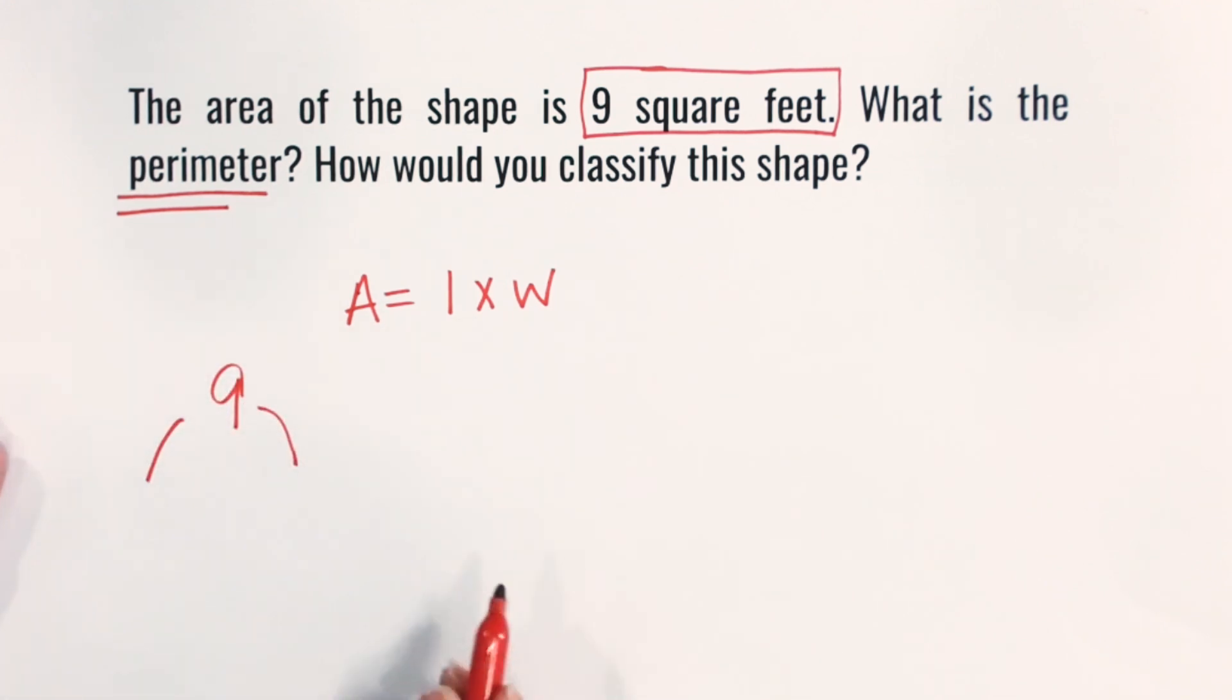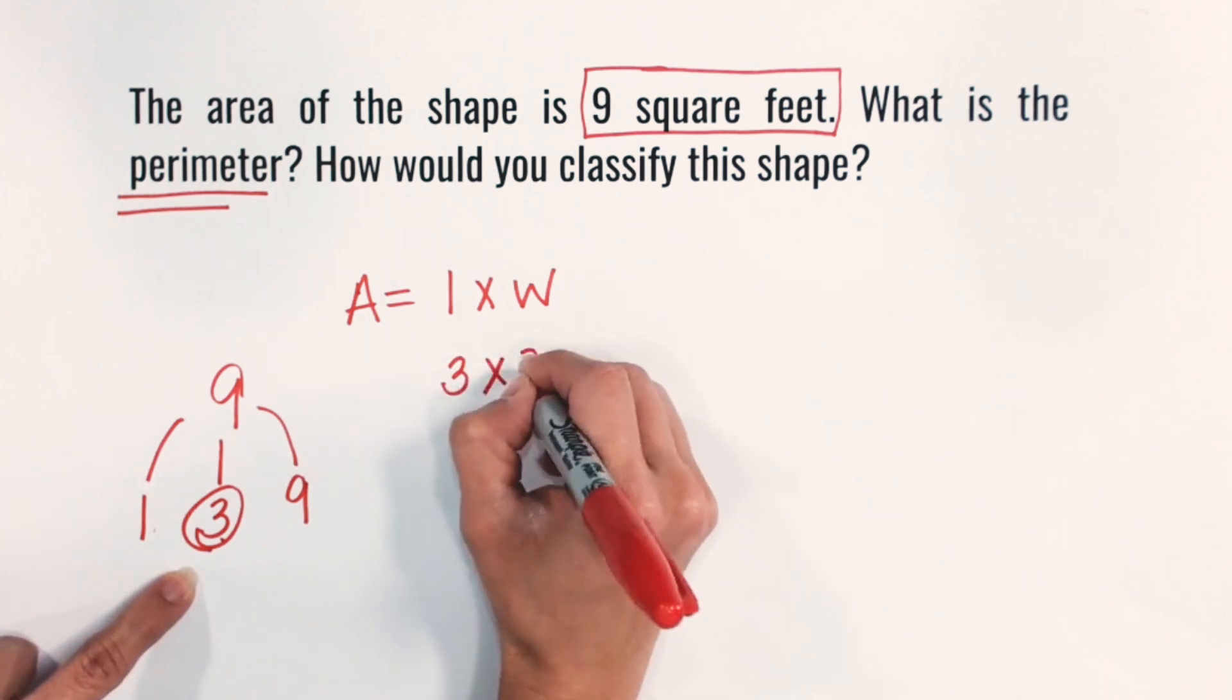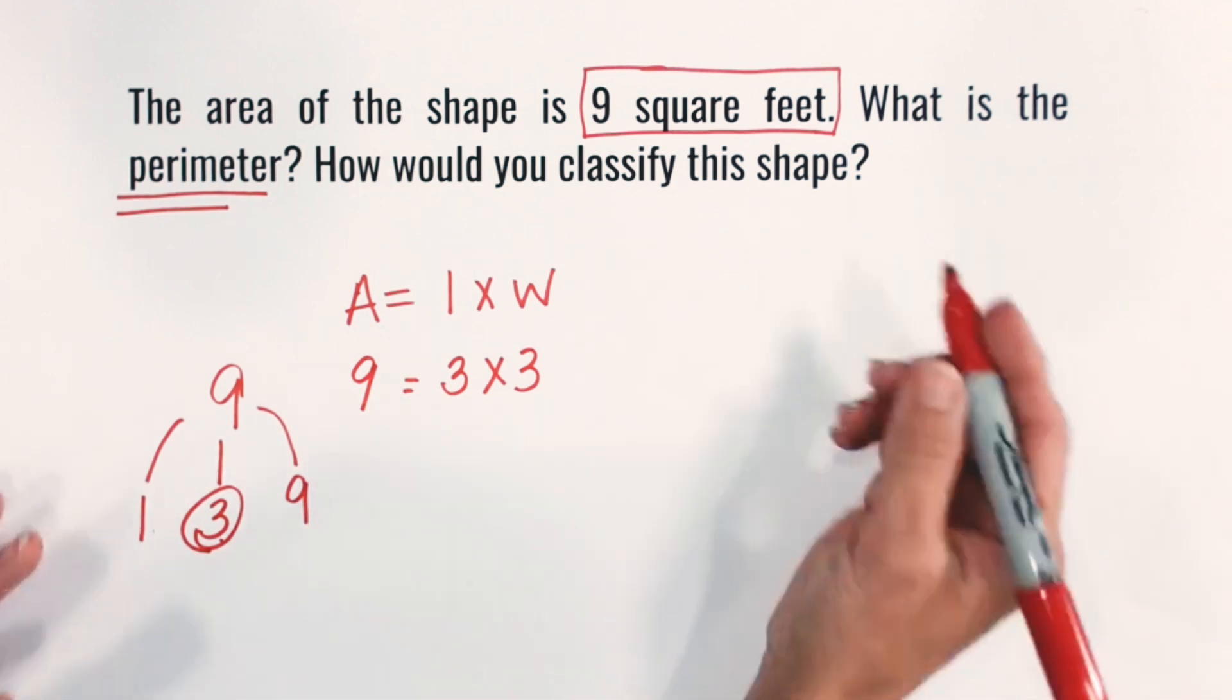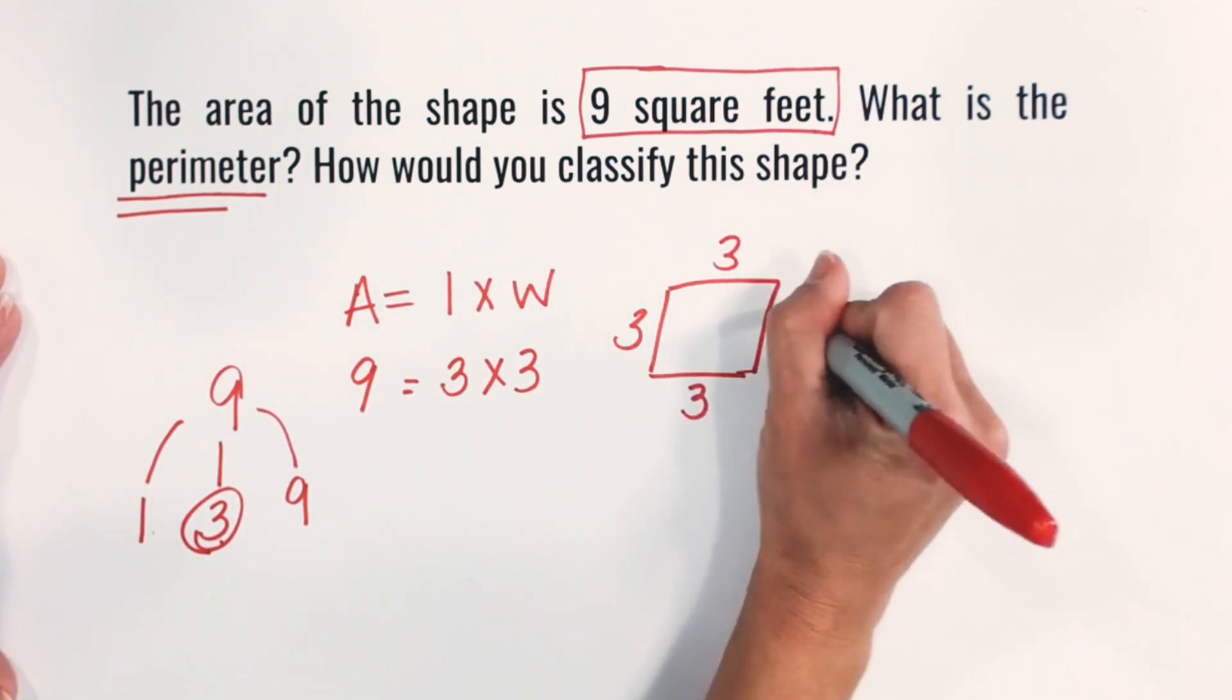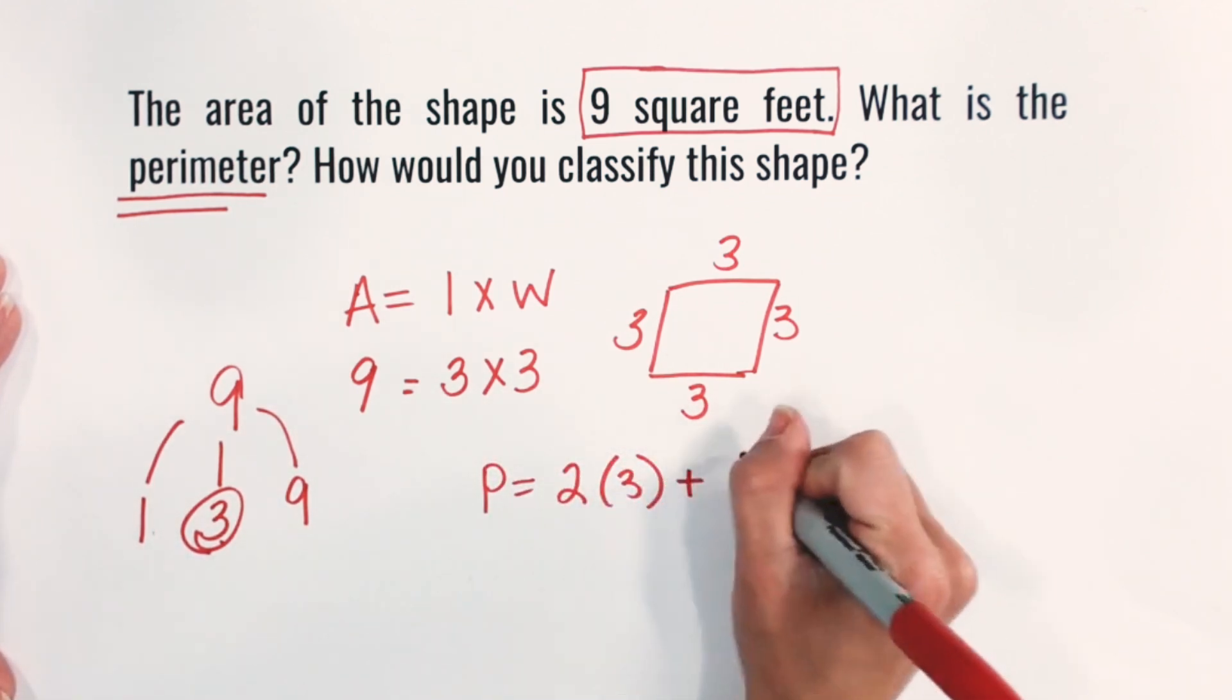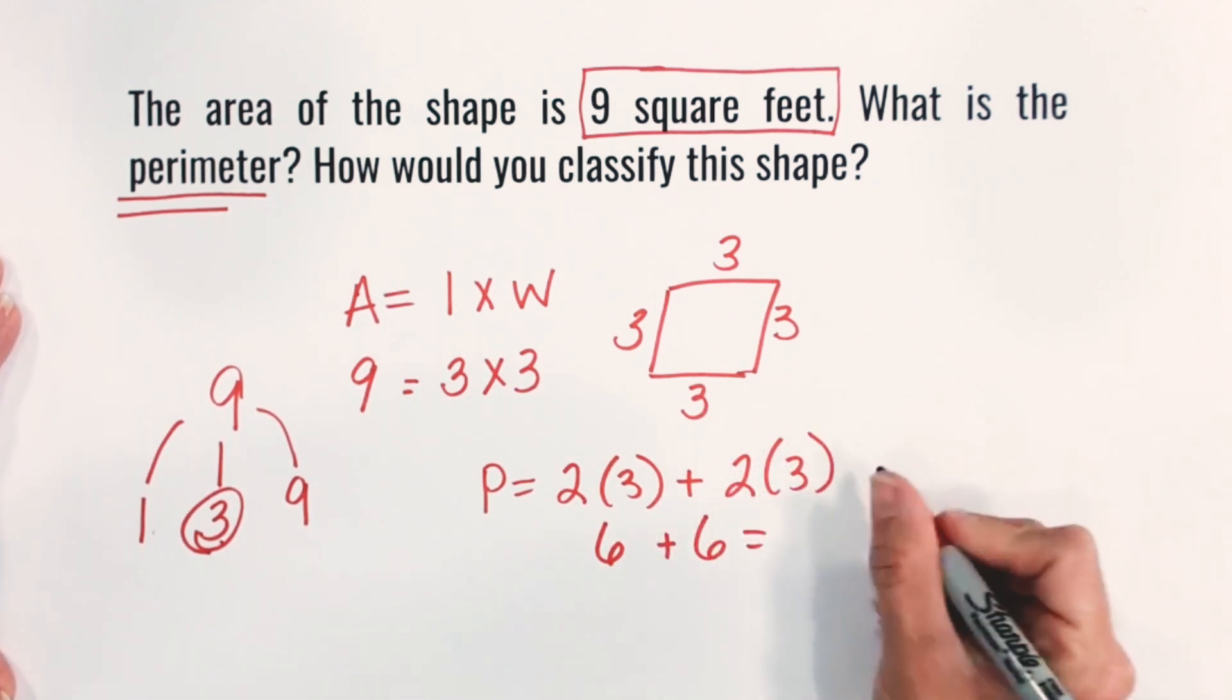So if we're factoring out 9, we have 1 times 9. 2 doesn't work. And then we have 3 times itself. So my factor pairs are 1 times 9 and 3 times 3. So I can use either one of those. So I'm going to go with 3 times 3 in this case. So 3 times 3 is going to equal 9, which is my area. And now I need to apply that to my rectangle. Well, if I have 3 times 3, then that's the same distance around. So we'll put 3 on all the sides, apply that perimeter formula, which is 2 times 3 plus 2 times 3. So 2 times 3 is 6. 2 times 3 is 6. And 6 plus 6 is 12. So my perimeter in this case is 12, go back to my unit of measure, feet, not square feet, remember, because we're doing the distance around.